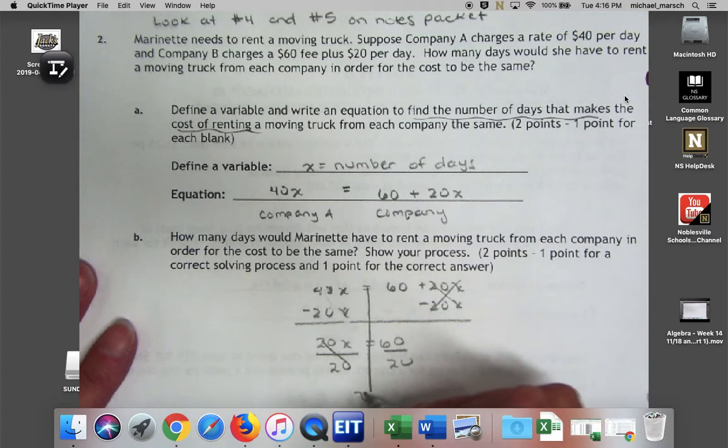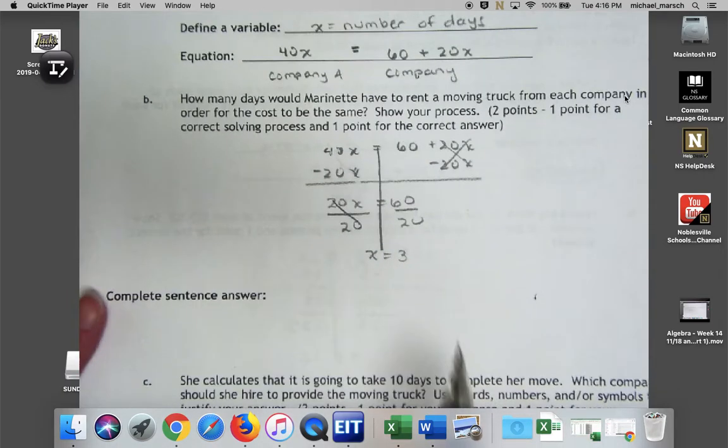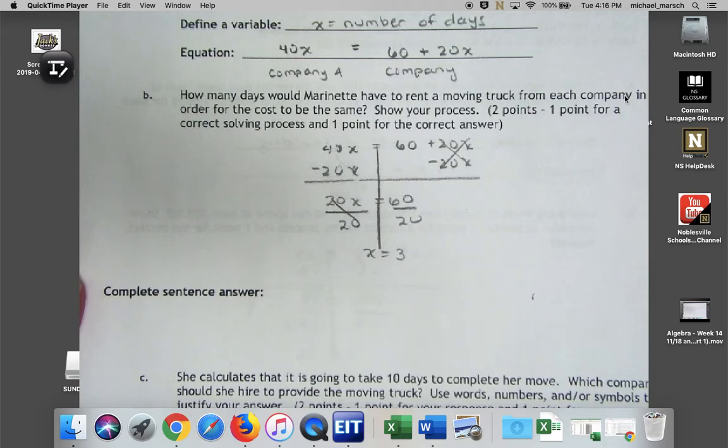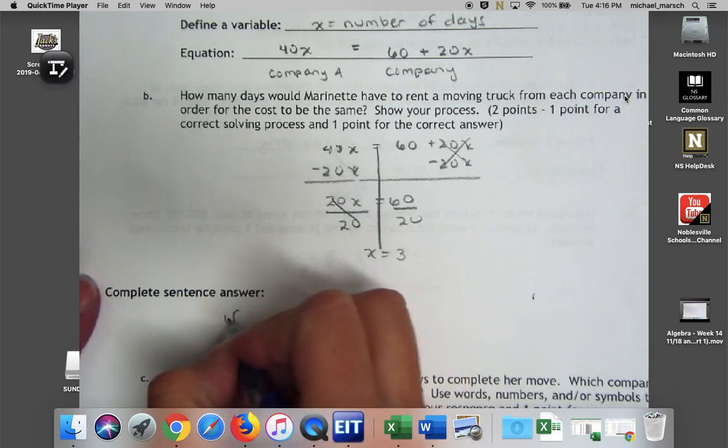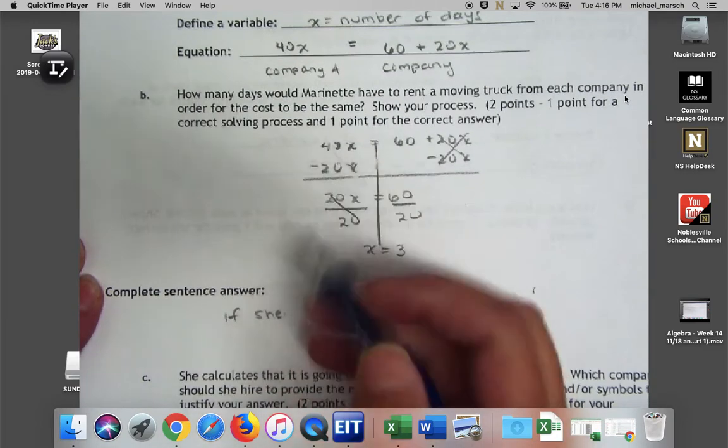So now I have 20x = 60. Divide both sides by 20, x = 3. So down here for my complete sentence answer, what does that three represent? Well, if I go back to the situation, they're asking me how many days would she have to rent a moving truck from each company in order for the cost to be the same.